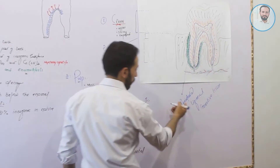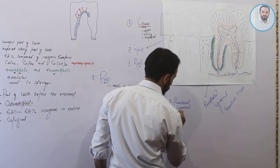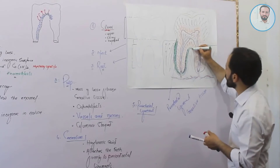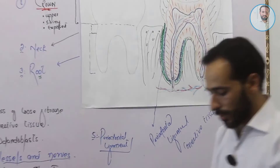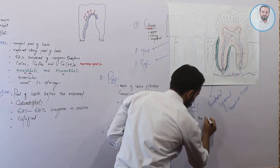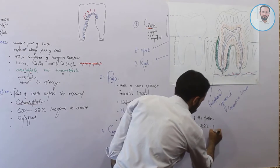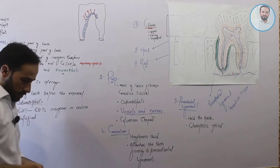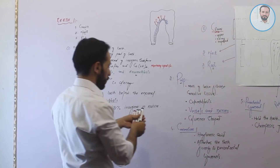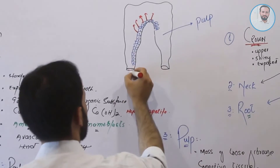This periodontal ligament is a connective tissue — it connects the tooth to the bone. So this joint is called gomphosis. The fifth part is the periodontal ligament, which is a dense regular fibrous connective tissue. It surrounds the root of the tooth, holds the tooth in place, and makes the gomphosis joint.